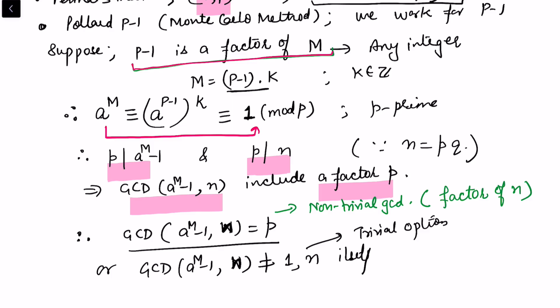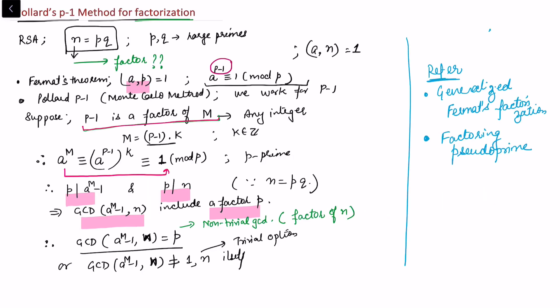This is aligned with what I covered in the generalized Fermat's theorem or factoring pseudoprimes — you can refer to my previous video on that. The question remains: how to find this m? If we can find m such that gcd(a^m - 1, n) is non-trivial, it will act as a factor of n, giving us the factorization of n.